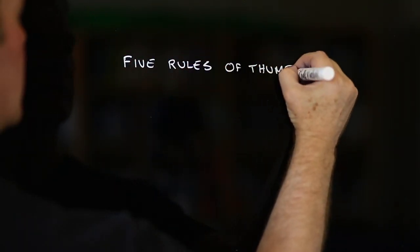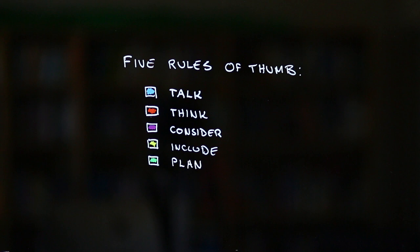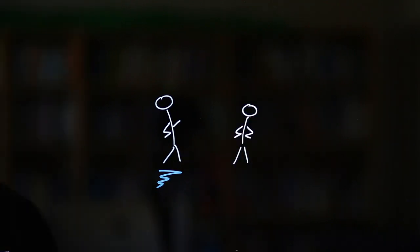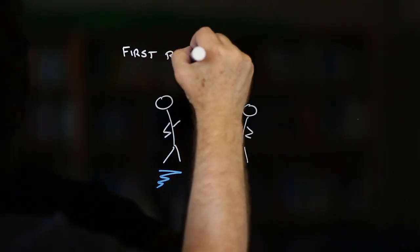One place to start is with these five Risk Bites rules of thumb. Number one, remember that the first rule of responsible innovation is to talk about responsible innovation.